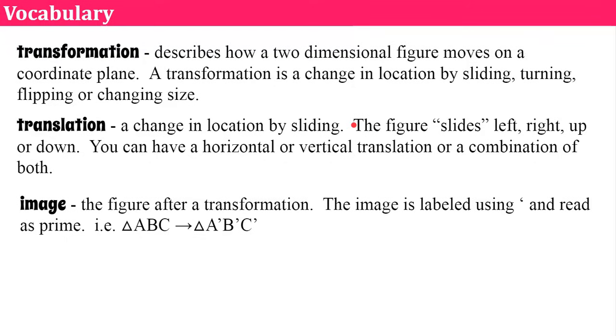An image is the figure after the transformation. So you start with a figure and then you have an image. The image is labeled with an apostrophe, and we call this in math prime. For example, you might have triangle ABC, which is our original figure, and transforms into triangle A prime, B prime, C prime. So these vertices all get labeled with this apostrophe, this prime, to show whoever's looking at your graph what the image is, what the transformation had been.